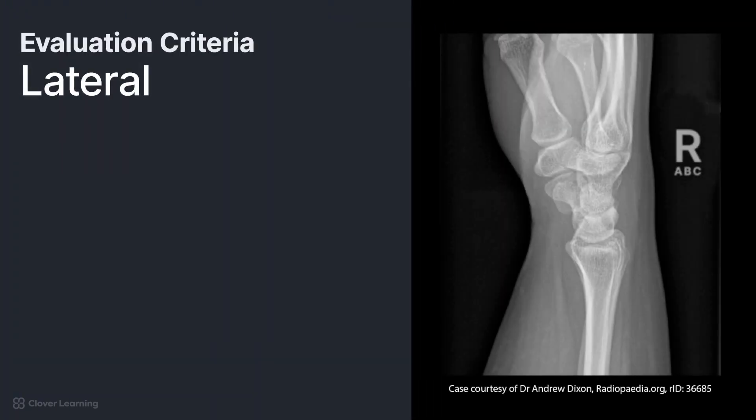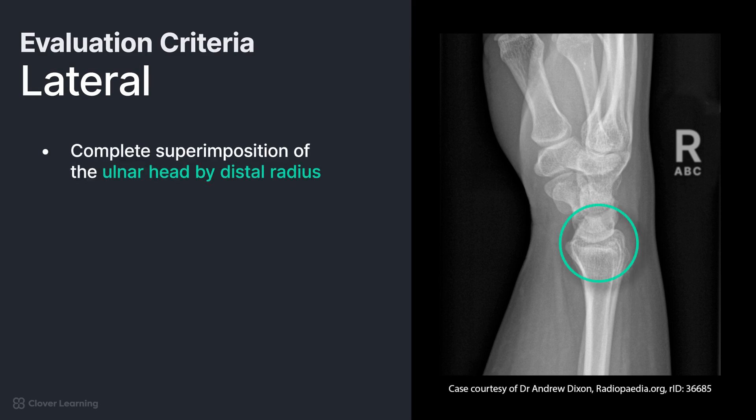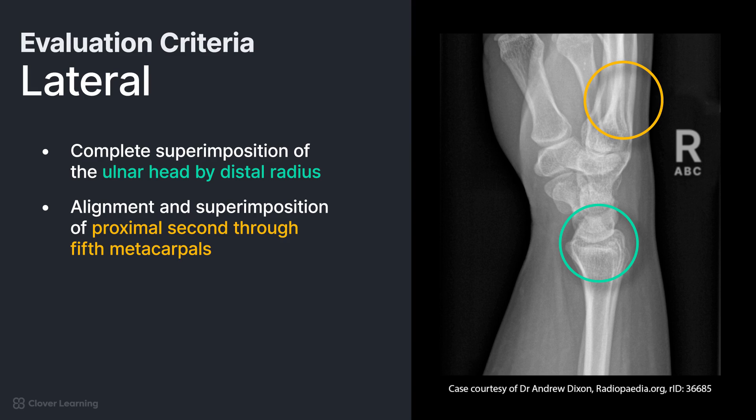The final projection in the series is the lateral. For a lateral projection of the wrist to be a true lateral, there must be complete superimposition of the ulnar head by the distal radius and alignment and superimposition of the proximal second through fifth metacarpals.